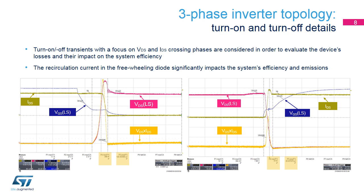The figures show the typical behavior when turning a MOSFET device off and on in a three-phase bridge topology. The VDS drain-source and VGS gate-source voltages of the low side device, as well as the current flowing through the device under analysis with the positive direction from drain to source, are shown. The losses can be calculated during a single switching transient. The VDS and IDS crossing phases are considered in order to evaluate the device's losses and their impact on the system's efficiency, or for a specific benchmark or comparison between different devices or technologies.